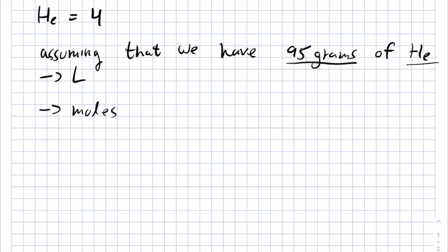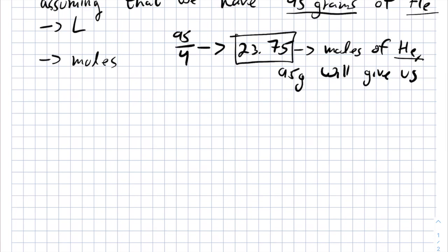So we will have to divide 95 by the atomic mass of helium in order to get 23.75 which is actually the number of moles of helium 95 grams of helium will give us.